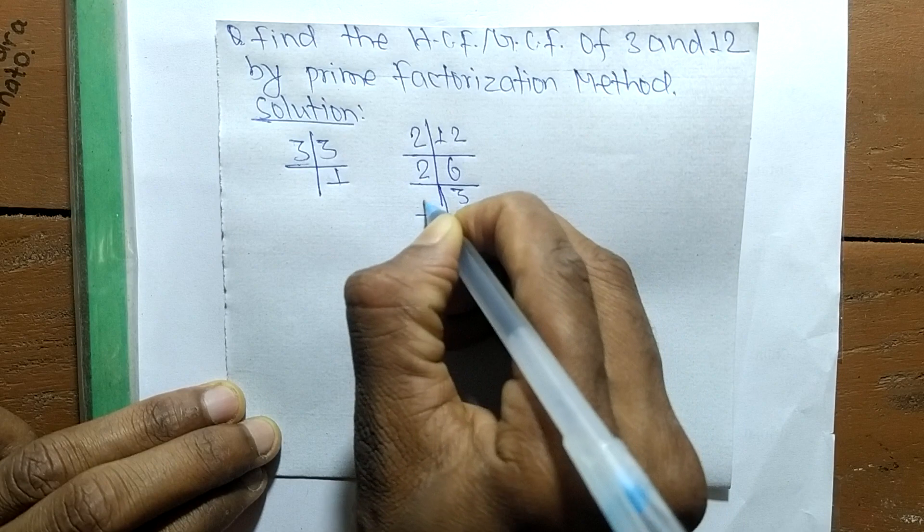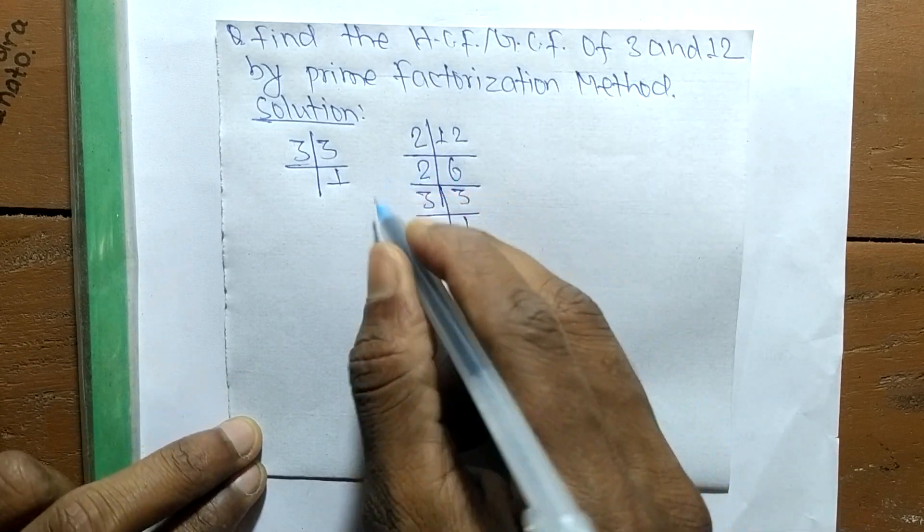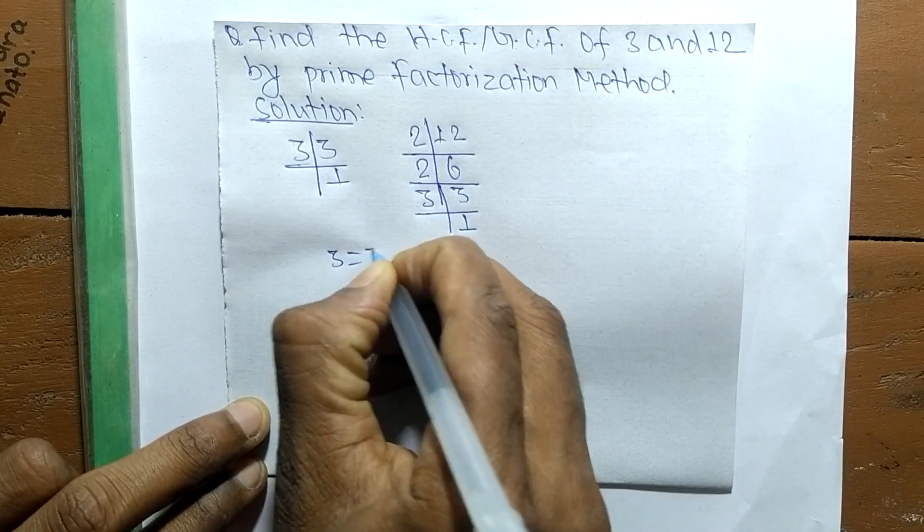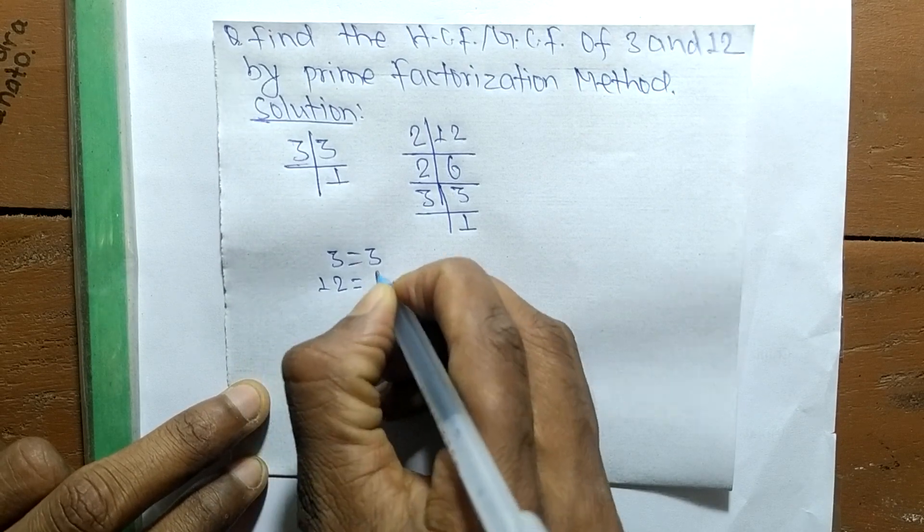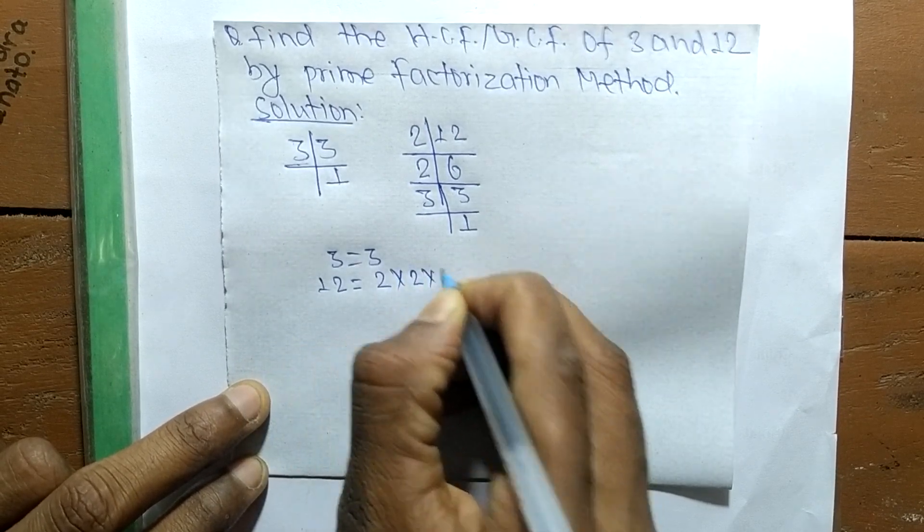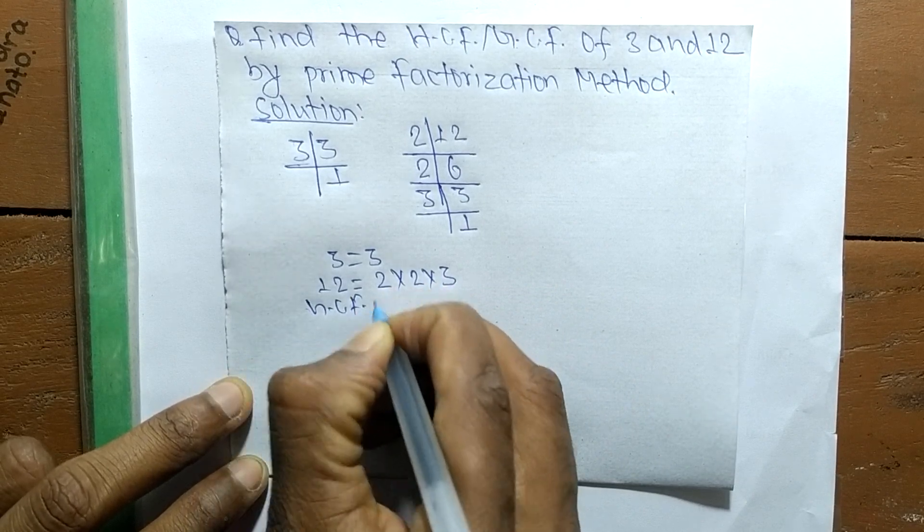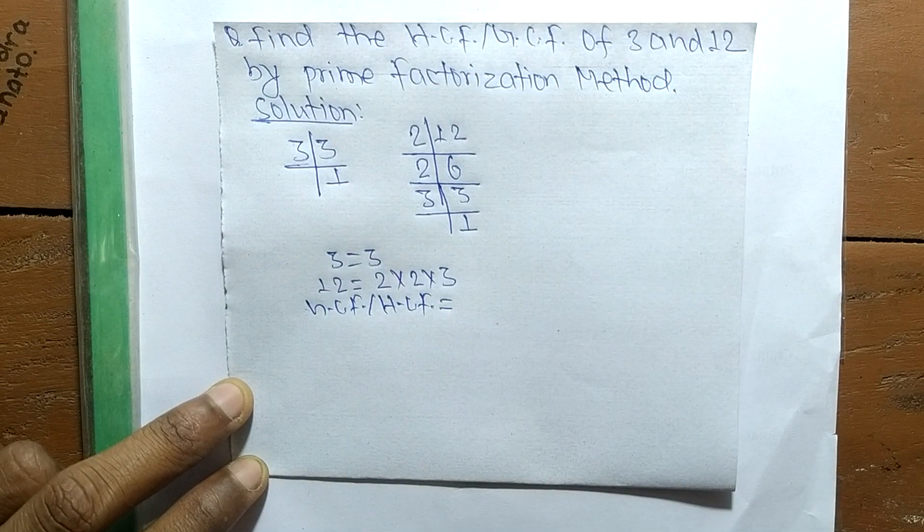So from these prime factors, we can write 3 is equal to 3, and 12 is equal to 2 into 2 into 3. So GCF or HCF is equal to... now we have to select the common factors in all these prime factors.